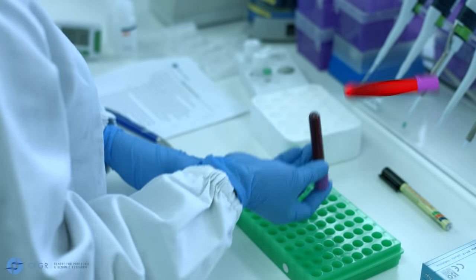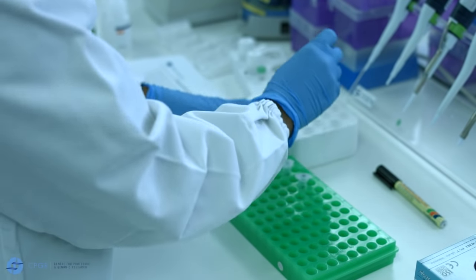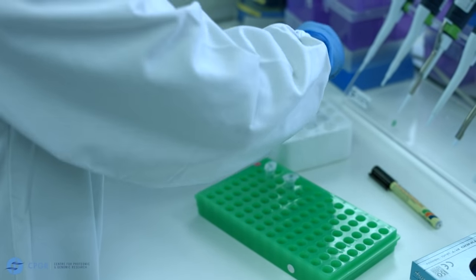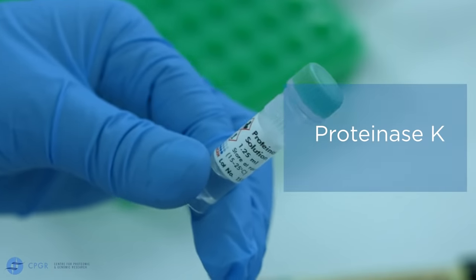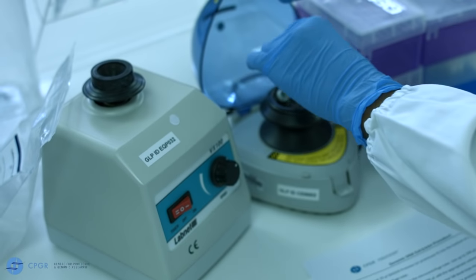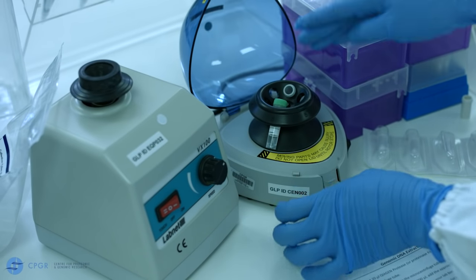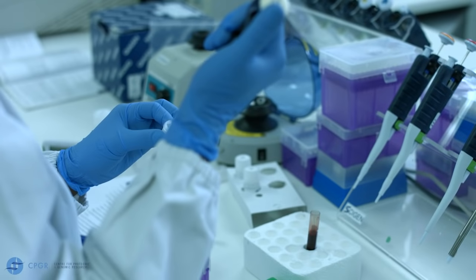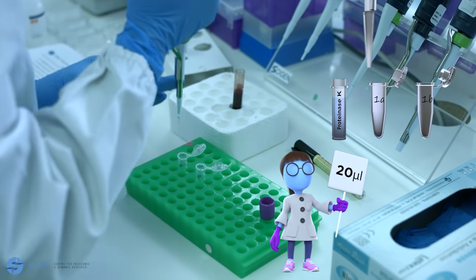Mix the blood by inverting the tube approximately 10 times to ensure you have a homogenous sample. Vortex the proteinase K briefly followed by a quick centrifugation step approximately 10 seconds.